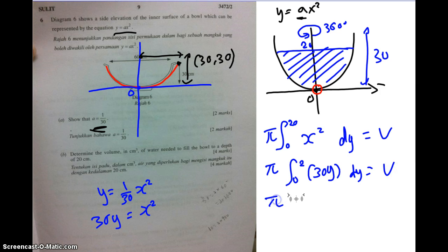I left the pi outside. So if I integrate, it will be quite simple. It's just 30y-square over 2. Then this is 2, 0 equals to volume. Of course, you solve this one. You can easily get this is 15. 15 multiple 15 multiple 2, 2 is just 4. So the answer for volume will be 60 pi cm cubed.